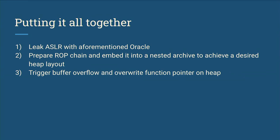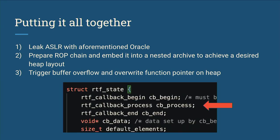Putting it all together: we leak ASLR with the oracle, then prepare a heap layout where we can overwrite a function pointer on the heap using the heap buffer overflow, and then execute a standard ROP chain to gain remote code execution. The function pointer we overwrote was called cb_process in the RTF parser — and it's the same function pointer we used to defeat ASLR via the out-of-bounds read.